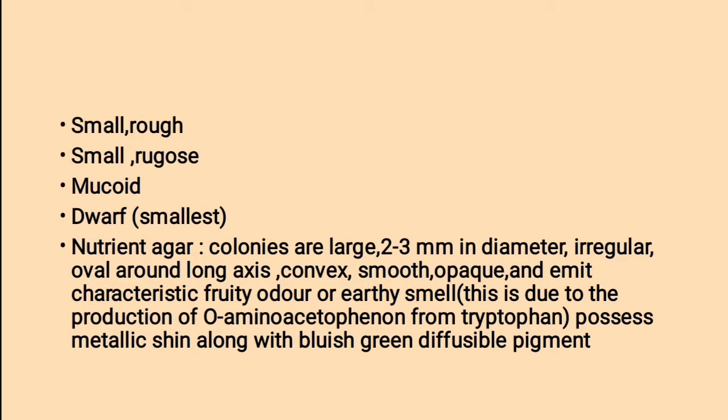Then mucoid colonies and dwarf, that is smallest, colonies. On nutrient agar, colonies are large, 2–3 mm in diameter, irregular, convex, smooth, opaque, and emit a characteristic fruity or earthy smell. This is due to the production of O-aminoacetophenone from tryptophan and they possess a metallic sheen along with a bluish-green diffusible pigment.